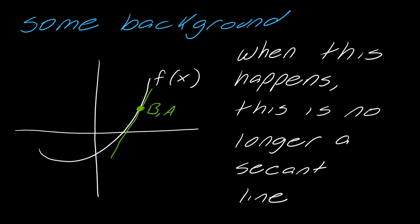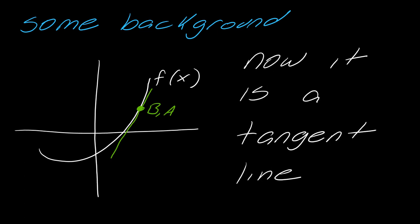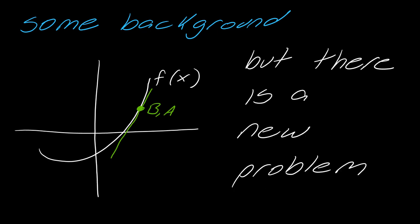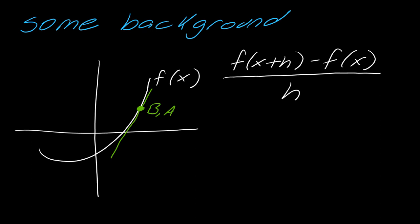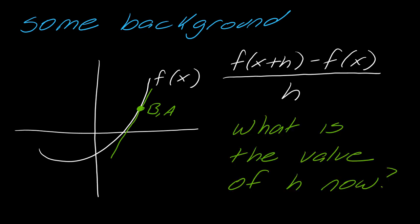So when this happens, there is no longer a secant line, just to make this clear, is now called a tangent line. So when we can minimize that distance between the two points, but there is a new problem with this. So remember the difference quotient. This was the difference quotient. So here's my question.